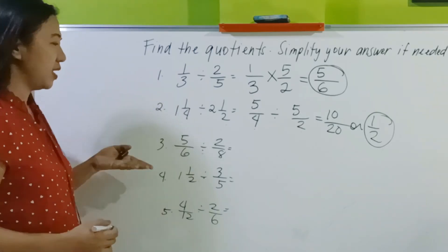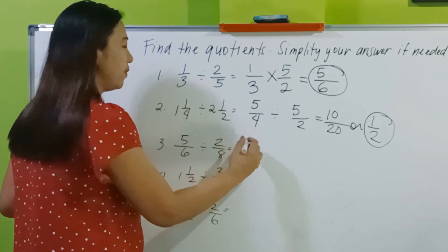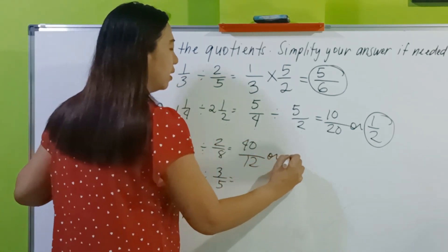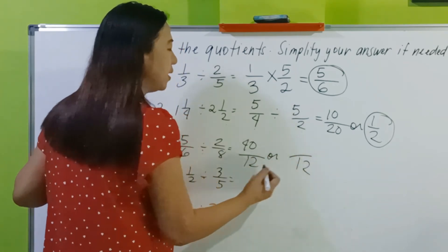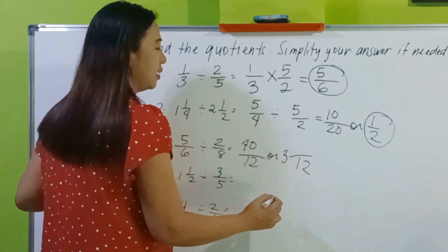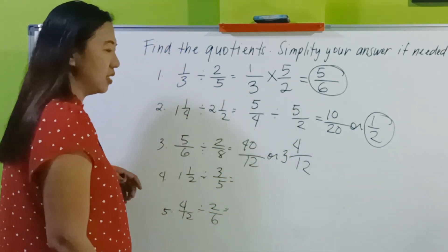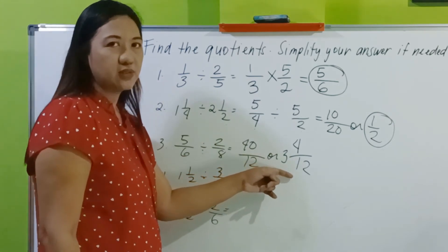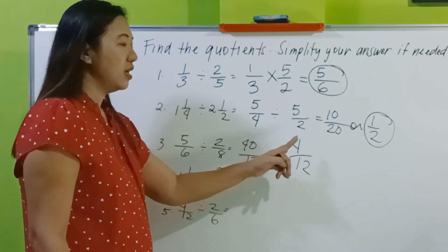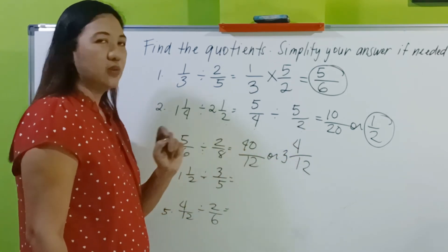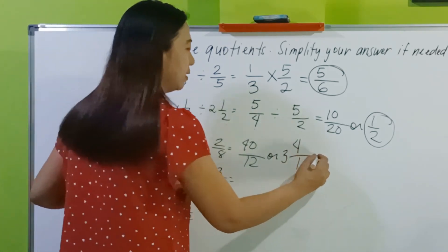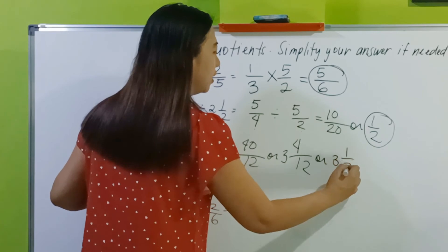Number 3 — shortcut: 8 times 5 is 40, 6 times 2 is 12. How many 12s are there in 40? We have 3, and the remainder is 4. Check: 12 times 3 is 36, plus 4 is 40 — correct. Can you still simplify? Yes — this is 3 and 1 third.